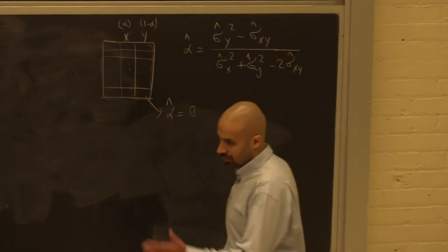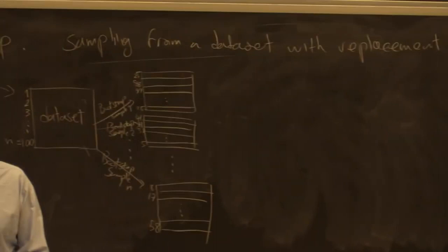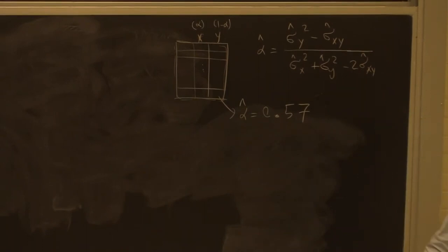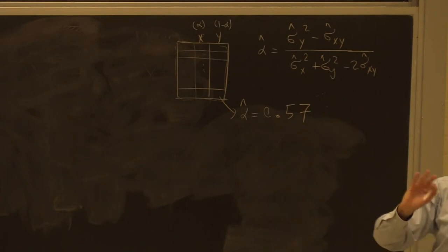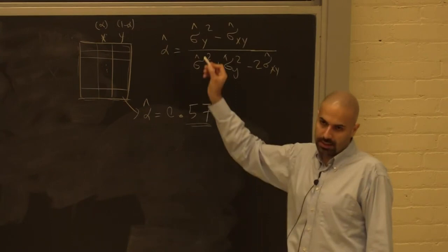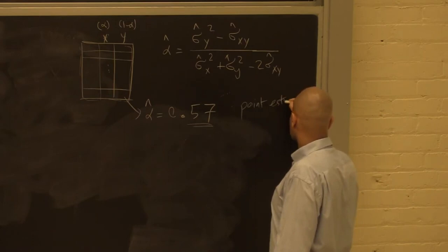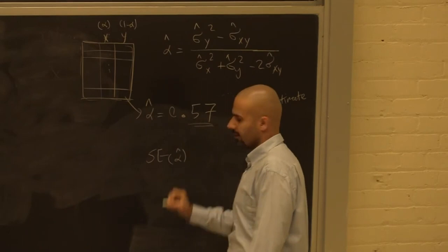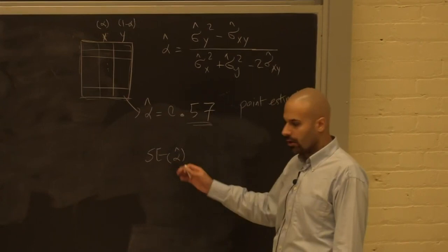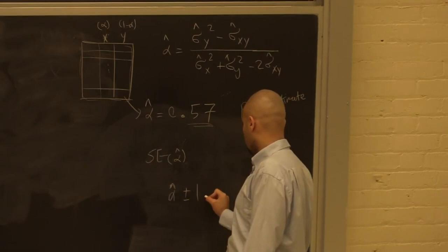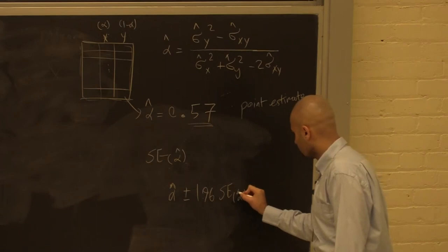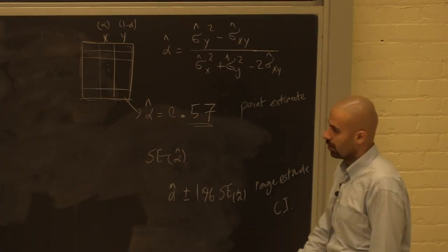Using the same value as the textbook, alpha-hat comes out to 0.57. This means the portfolio with minimum variance should have 57% invested in X and 43% invested in Y. But this is a point estimate. We want to get a sense of the standard error of alpha-hat. We cannot get the standard error because we only have one dataset — but here we improvised and created N bootstrap datasets.